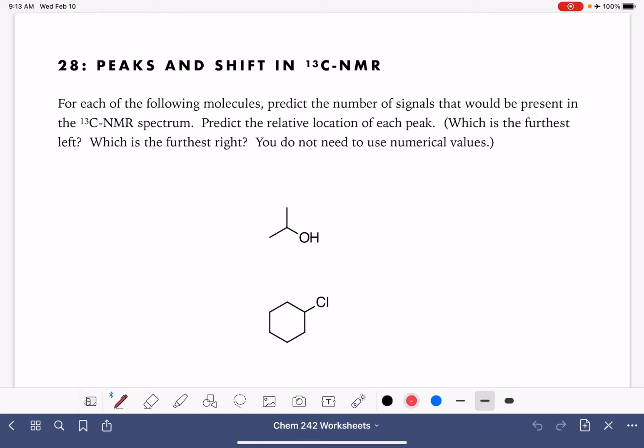This process is exactly the same as predicting the number of peaks in a proton NMR. We're just looking for the number of different types of equivalent carbon atoms.